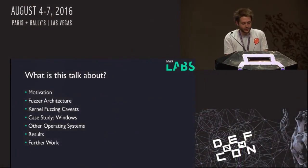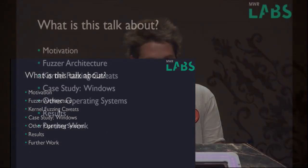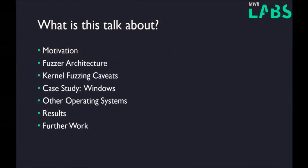Quick agenda: we're going to run through our motivation for writing a kernel fuzzer, our architecture, some caveats to be aware of if you're doing your own kernel fuzzing. We'll run through Windows as a case study, plus the other operating systems we've looked at, the results we've got, and what we're looking to do over the next few months.